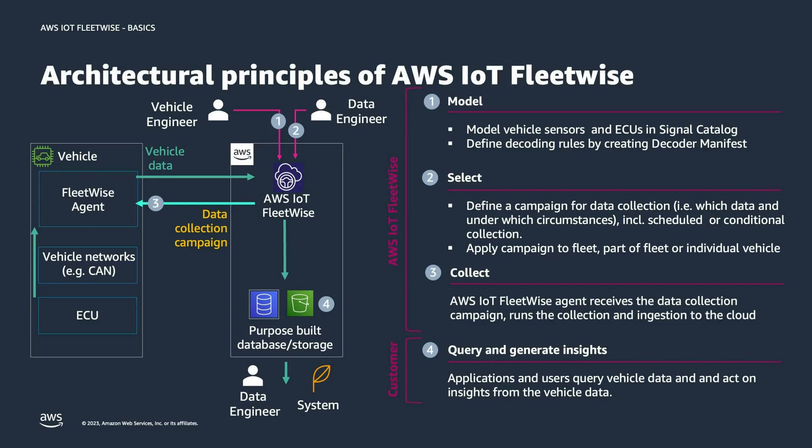Steps one through three is what FleetWise helps you with, and step four is your responsibility to build your systems on top. That's the general concept — the architectural principles of AWS IoT FleetWise.